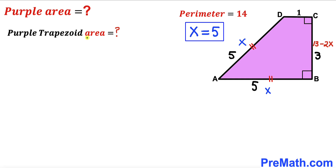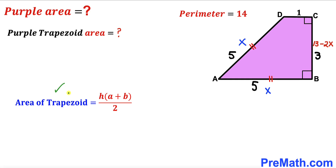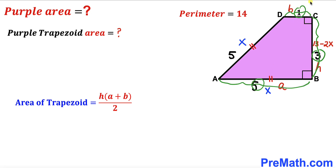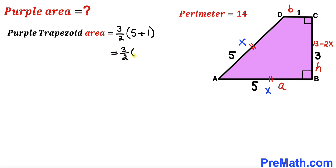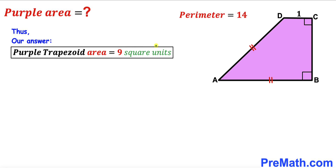Now let's calculate the area of this purple shaded trapezoid using the formula: Area equals H times (A plus B) divided by 2. Our height H is 3, base A is 5, and base B is 1. Substituting: Area equals 3 times (5 plus 1) divided by 2 equals 3 times 6 divided by 2 equals 9. Therefore the area of this trapezoid is 9 square units.